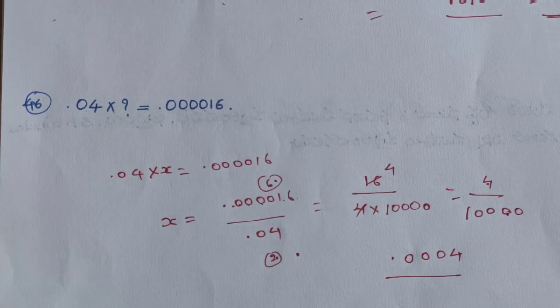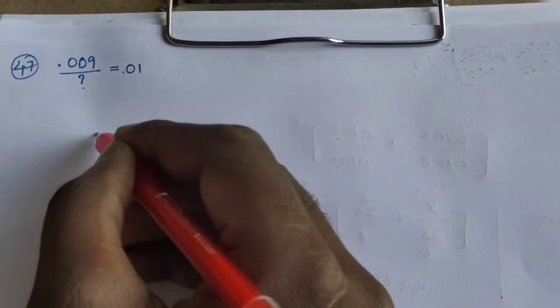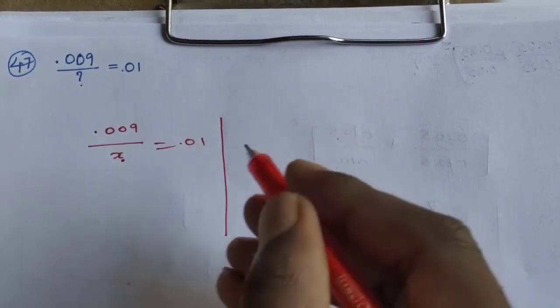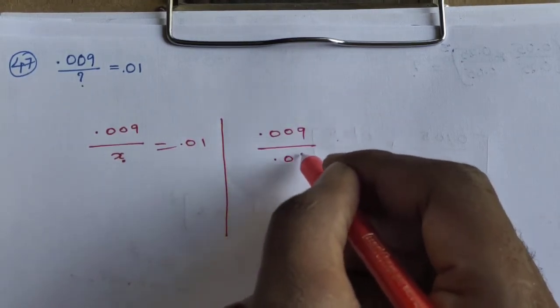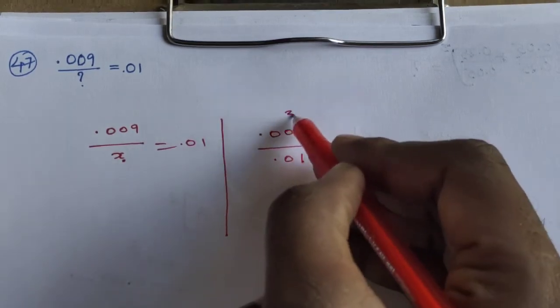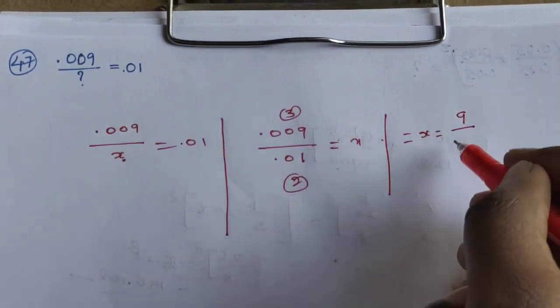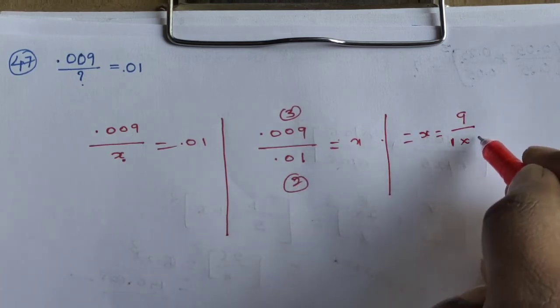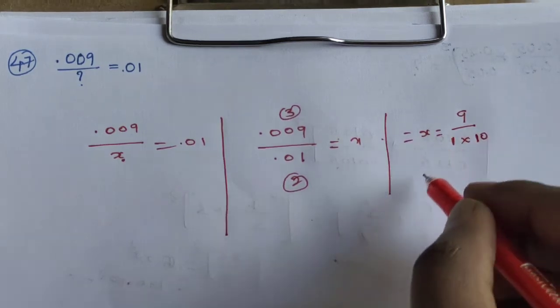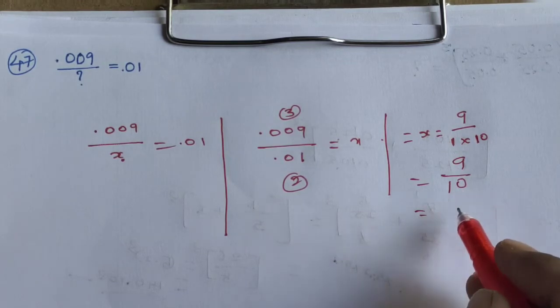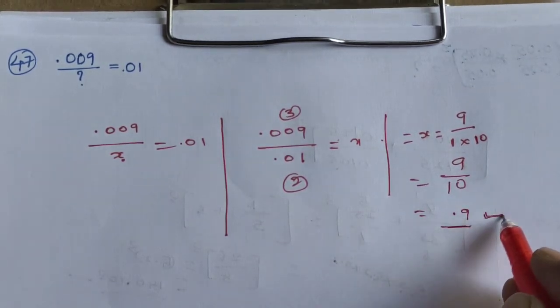Next, simple tricks. Question 47: 0.009 divided by question mark equals 0.01. So x equals 0.009 divided by 0.01, which equals 0.9 — that is 9 by 10. Answer is 9/10. Next, question 48.